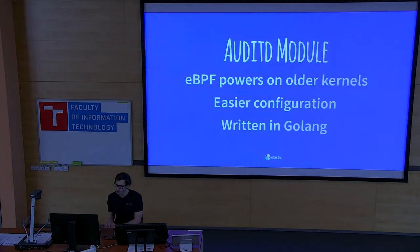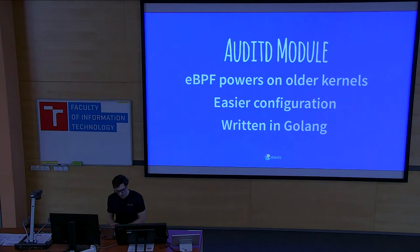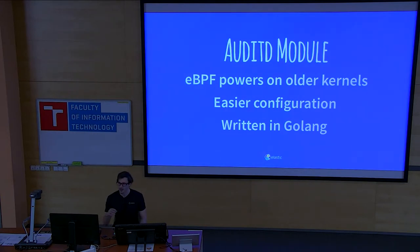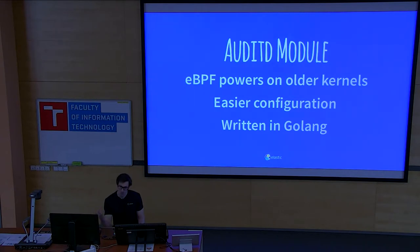Sometimes people ask why not eBPF, which is probably more powerful. The downside of eBPF — the Extended Berkeley Packet Filter — is it depends on newer kernel versions and we have a lot of customers on very old kernels. It's another way to filter for security events tying into the network and other events, but with older kernels you have a very limited subset of features. AuditD has been around for a long time and is generally available, and we think it's slightly easier to configure.